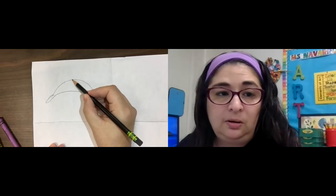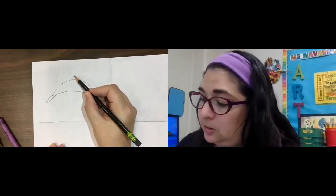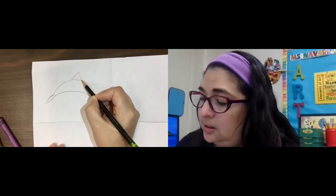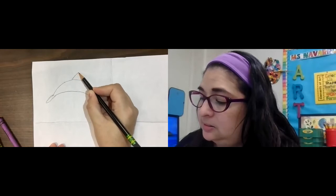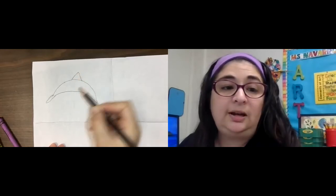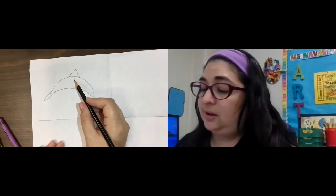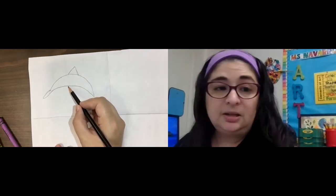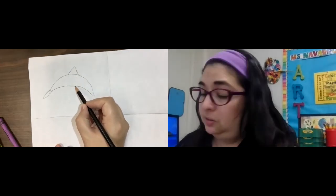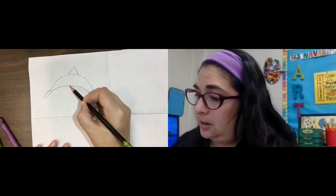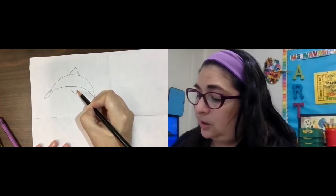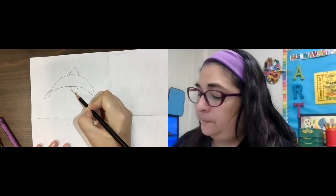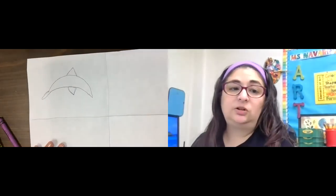Our fins are going to be triangular shapes. So one up here. So he has a triangle up here for his fin, dorsal fin. He needs another one down here as well. There you go. You got that triangle shape.